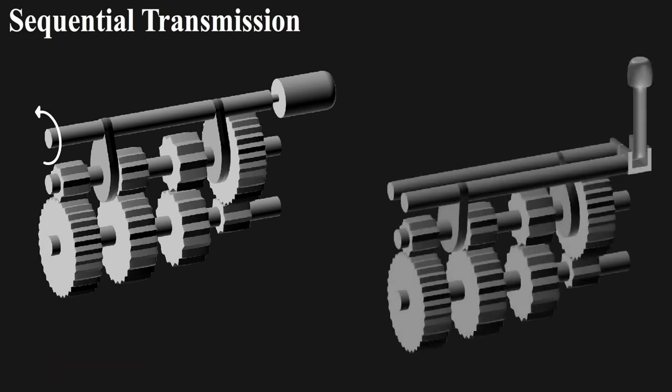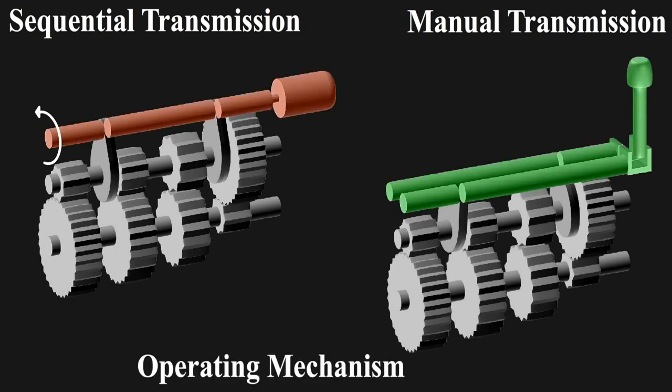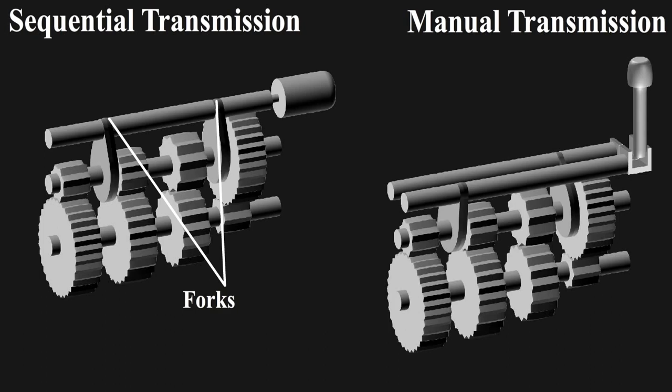The sequential transmission is similar to manual transmission; the only difference is the operating mechanism. This has all forks mounted on a single shaft, while in manual there is only one fork per shaft, requiring multiple shafts for multiple gears.